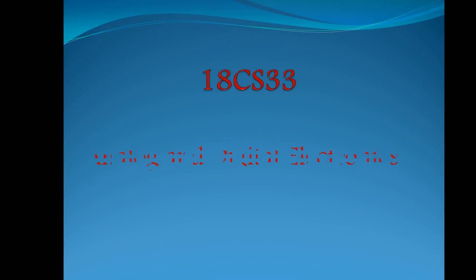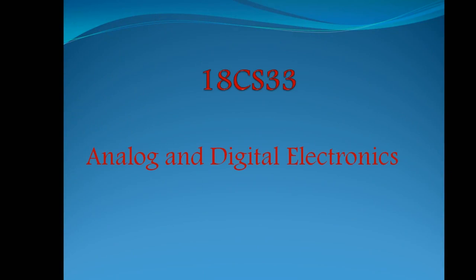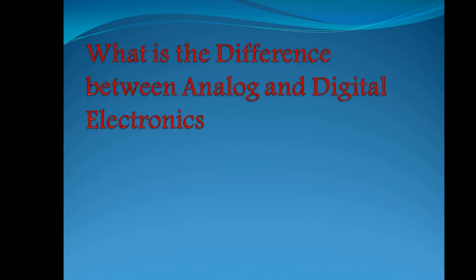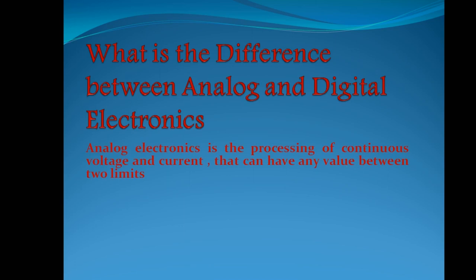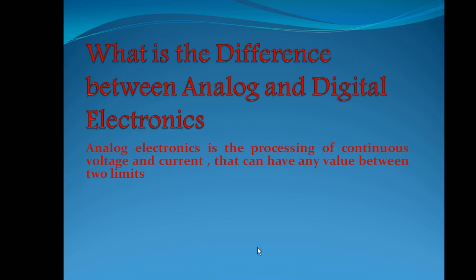The subject is Analog and Digital Electronics, subject code 18CS33. The first question is: what is the difference between analog and digital electronics? Analog electronics is the processing of continuous signals like voltage and current. Digital electronics is the processing of discrete signals.